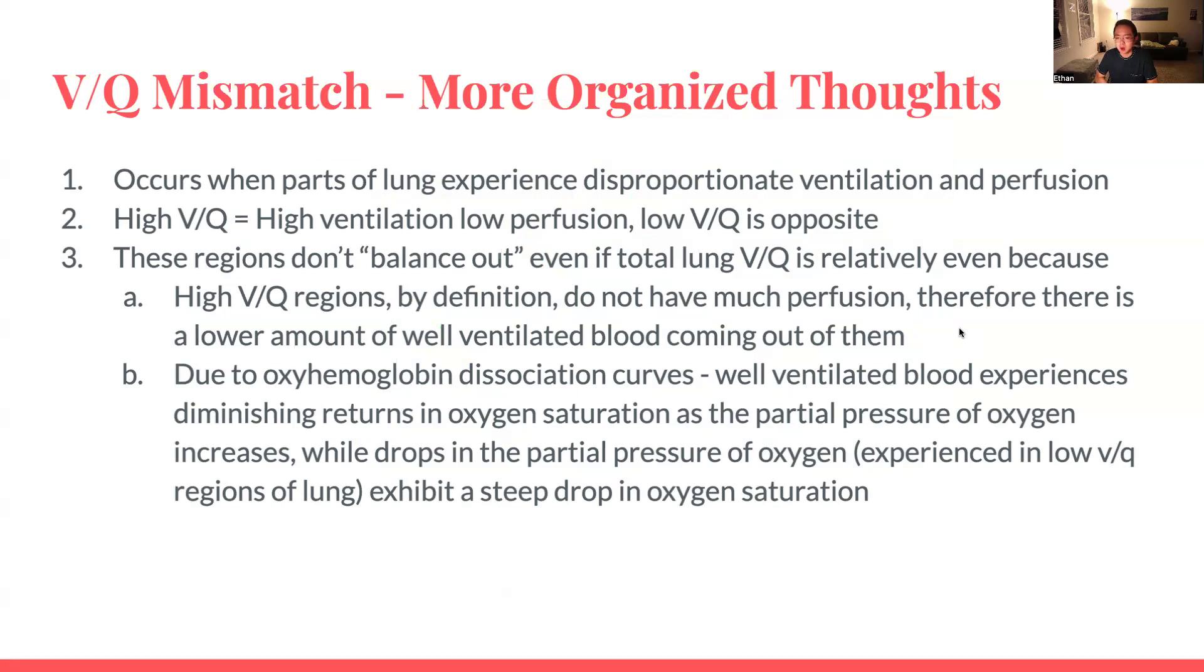So that was a bit disorganized. What are my organized thoughts? V/Q mismatch occurs when parts of lung experience disproportionate ventilation and perfusion. A high V/Q unit region has high ventilation, low perfusion. Whereas low V/Q regions are the opposite, high perfusion, low ventilation. These regions don't balance out, even if total lung V/Q is relatively balanced, because of two main things. One, high V/Q unit regions by definition don't have much perfusion. Therefore, there's a lower amount of well-ventilated blood coming out of them compared to the low V/Q unit regions. And to make matters worse, due to how the oxyhemoglobin dissociation curve works, the well-ventilated blood experiences diminishing returns in the oxygen saturation and therefore oxygen content, even as you dial up the partial pressure of oxygen in said blood. Whereas on the other hand, drops in the partial pressure of oxygen in those low V/Q unit regions of lung exhibit a steep drop, a nonlinear drop in oxygen saturation, meaning that the blood leaving low V/Q unit regions is very poorly oxygenated and it's not like the high V/Q unit regions are hyper oxygenated. They're not.